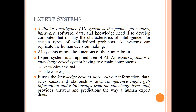In short, trying to make a computer act like a human being. Artificial intelligence systems mimic the functions of the human brain. Expert systems are an applied area of artificial intelligence. An expert system is a knowledge-based system having two main components: the knowledge base and the inference engine.